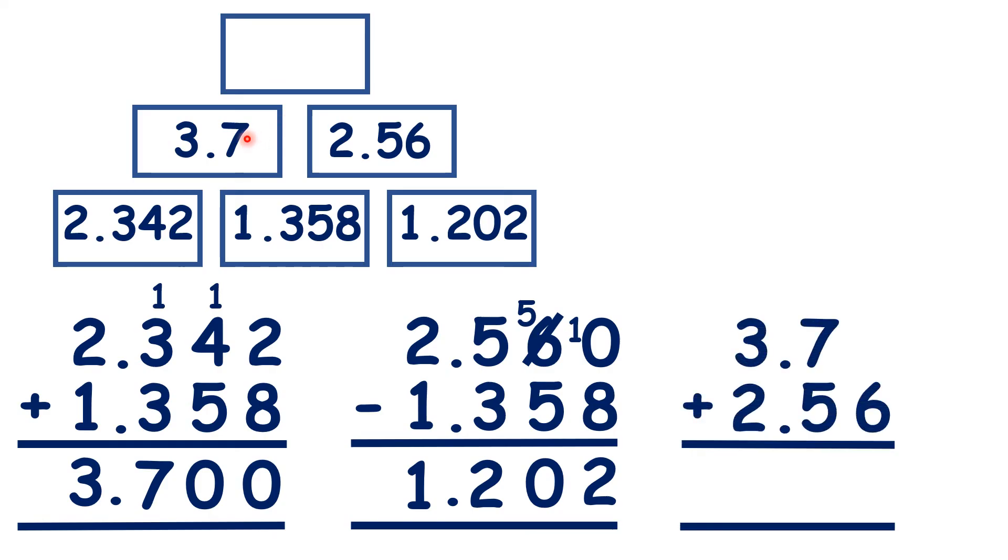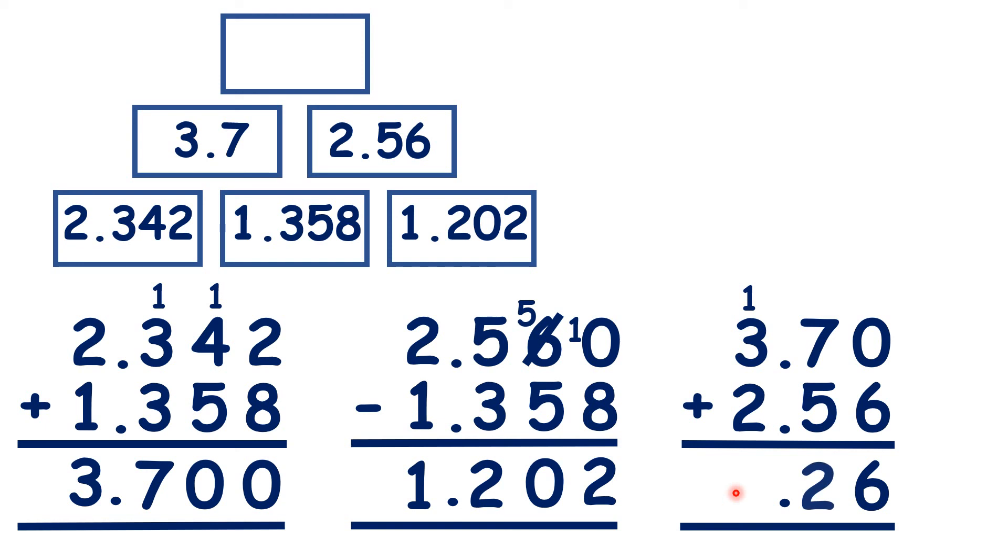So now adding 3.7 and 2.56 will get us our top brick. So there's our zero and our decimal point. So our top brick has a value of 6.26.